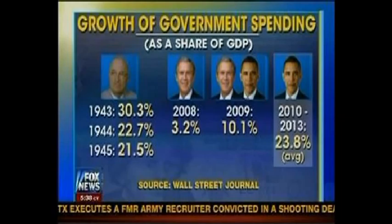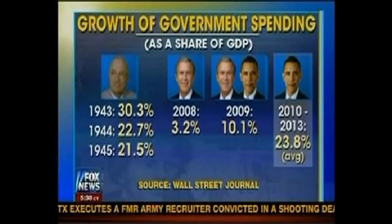Another example of what Fox likes to do is changing the units of comparison. When two things are likely to be very similar, one approach is to present the numbers in different units. Here's an example where total spending for 2010 to 2013 is compared to deficits in 2008 — with no labeled axes. You see numbers like 3.2 percent as a share of GDP in 2008, 10.1 percent in 2009, then averages from 2010 to 2013 compared to figures from 1943, 1944, and 1945. It's confusing — either deliberate or stupidity — and in either case you shouldn't be trusting this stuff.